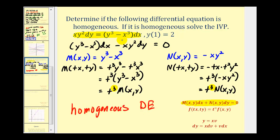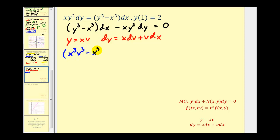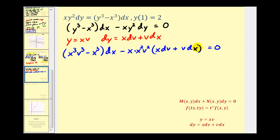Now we can solve this using substitution. Remember, we have a choice of substitutions. Function N is simpler than function M, so it's easier to perform a substitution for DY, meaning we let Y equal X times V, and therefore DY is equal to X times DV plus V times DX. Performing the substitution: for Y cubed we'd have X cubed V cubed, minus X cubed DX, minus X times X squared V squared, times the quantity X DV plus V DX.